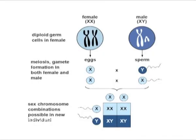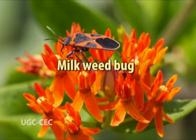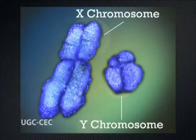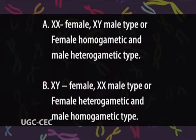According to this theory, one sex produces two types of gametes and each type of gamete determines a different sex on fertilization. This type of sex determination may be classified into two types: first, XX/XY type or Lygaeus type, first studied in the milkweed bug Lygaeus by Wilson, where sex is determined by the presence of X and Y chromosomes. Second, XY female/XX male type, or female heterogametic and male homogametic type.